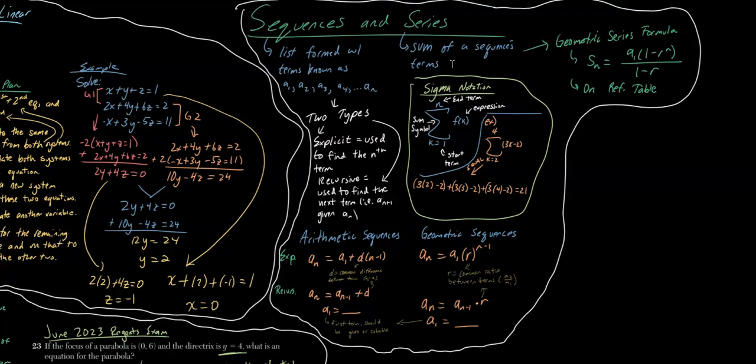The final topic is sequences and series. Sequences are lists formed with terms; series are the sum of those terms. There are two types: arithmetic and geometric. Arithmetic sequences are like linear equations — you add or subtract a common difference to get to the next term. Geometric sequences are like exponential — you multiply or divide by a common ratio. Unlike equations, sequences are only defined for integers, not decimals or values in between.